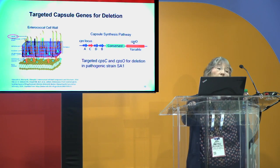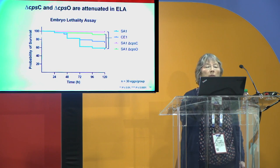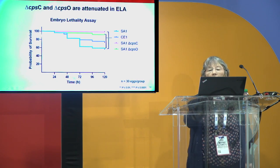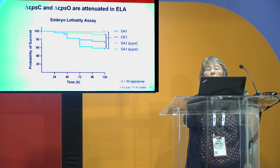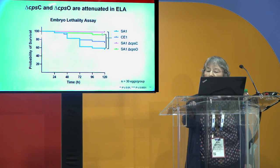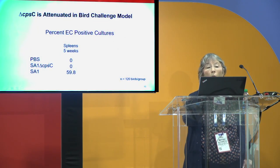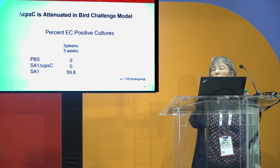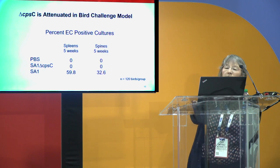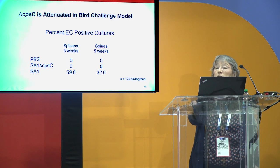Before using the deletion mutants as probiotics, we had to prove they were attenuated and safe to use in birds. We first used our embryo lethality assay, shown as a Kaplan-Meier survival curve. We showed CPSC and CPSO are attenuated: SA1 wild-type had a 60% survival rate, while the CPSC deletion had 100% survival and the CPSO deletion had 95% survival. In our bird challenge model at five weeks with wild-type, we had almost 60% positive spleens, but with the CPSC challenge there were no positive spleens. Spinal cultures reflected the same pattern — 32% positive spines with wild-type and none with CPSC. We now have similar results for our CPSO mutant.